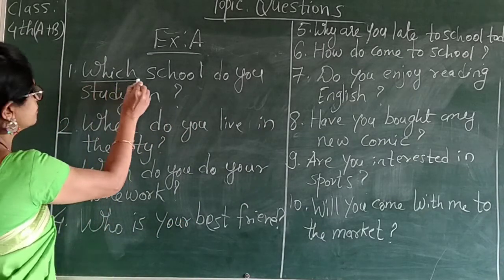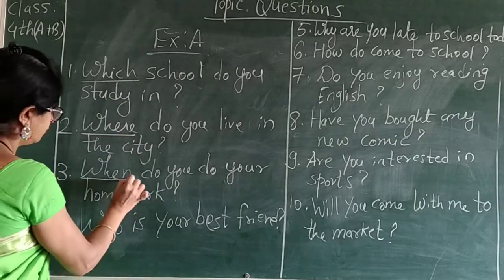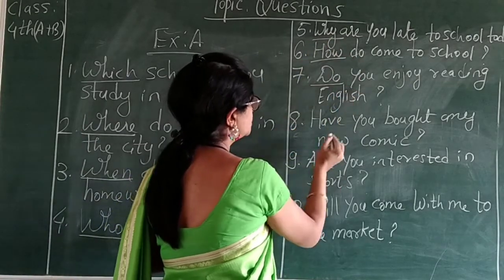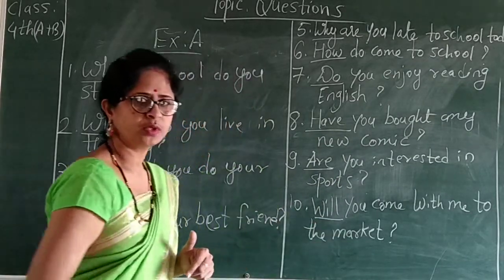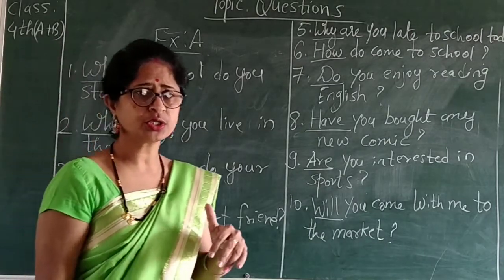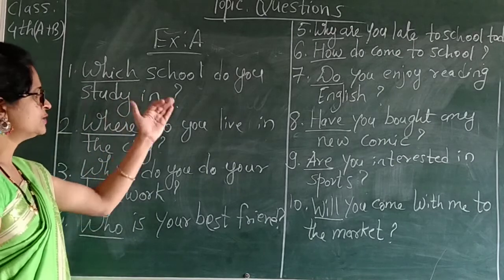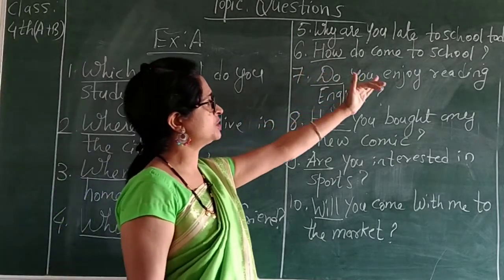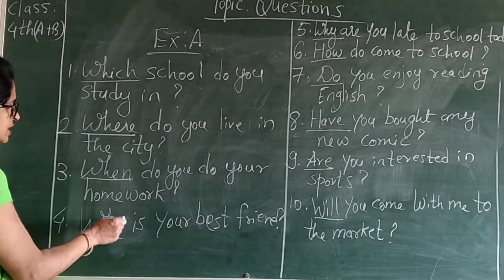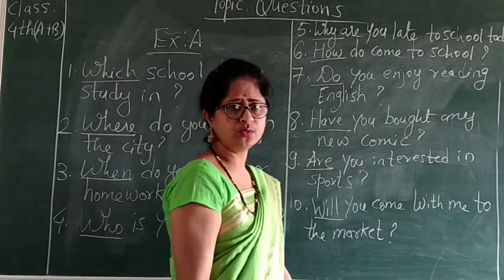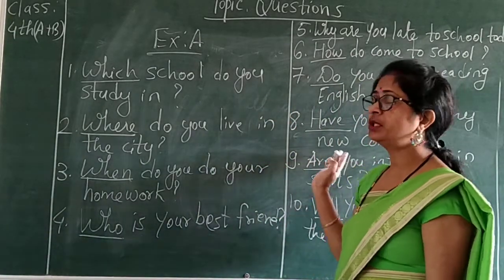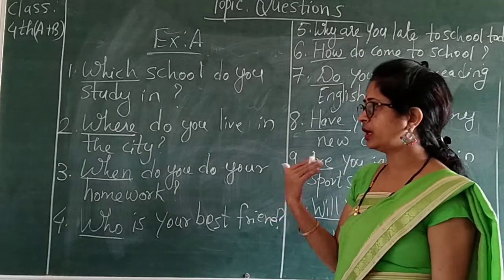Now see the question words used: which, where, when, who, why, how, do, have, are, will. All these words I told you in the beginning — when we begin a question we have to use these types of words, and after every question is completed, we put a question mark. These answers are yours only, so I cannot tell you the answers. You have to write down your own answers.